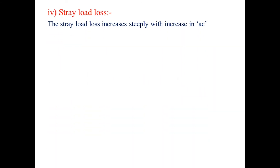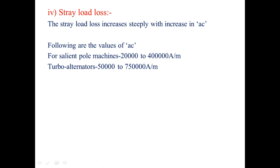The fourth factor is stray load losses, which increase steeply with increase in specific electrical loading. The recommended values of AC are: for salient pole machines, 20,000 to 40,000 ampere per meter; for turbo alternators, 50,000 to 7,50,000 ampere per meter.